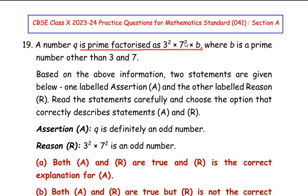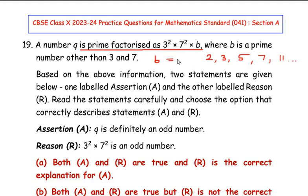A number q is prime factorized as 3² × 7² × b, where b is a prime number other than 3 and 7. Remember that prime numbers start from 2, then 3, 5, 7, 11, and so on. Since b can also be equal to 2, let us consider b = 2 and check whether the Assertion is true.